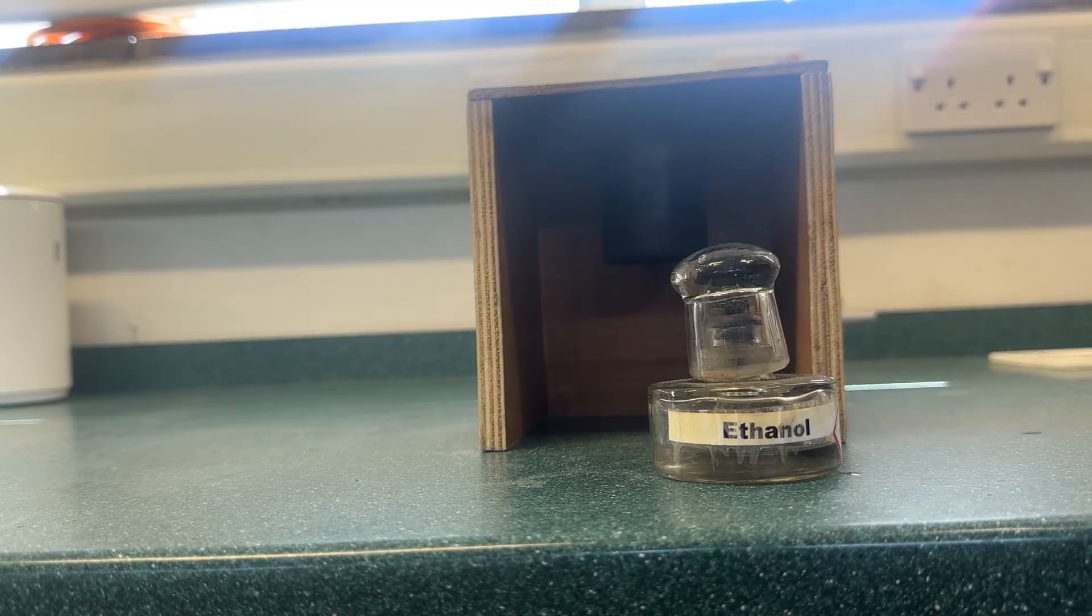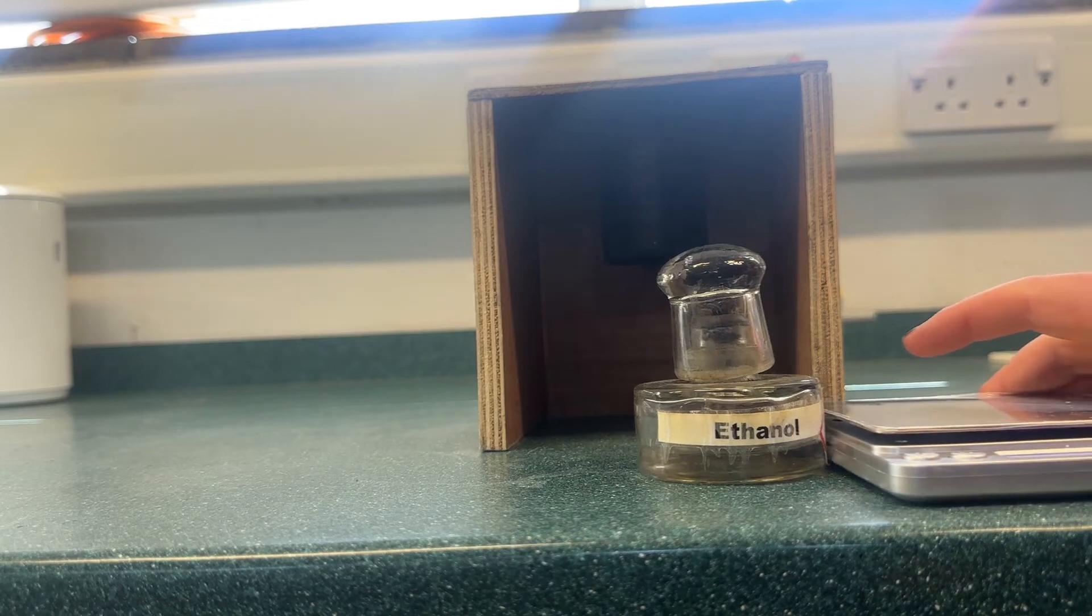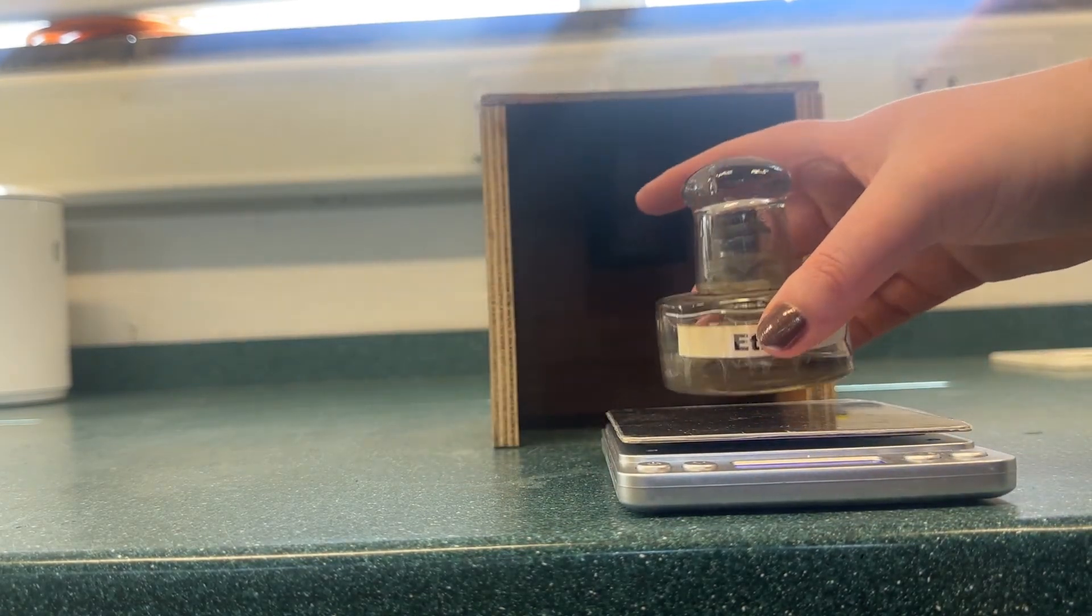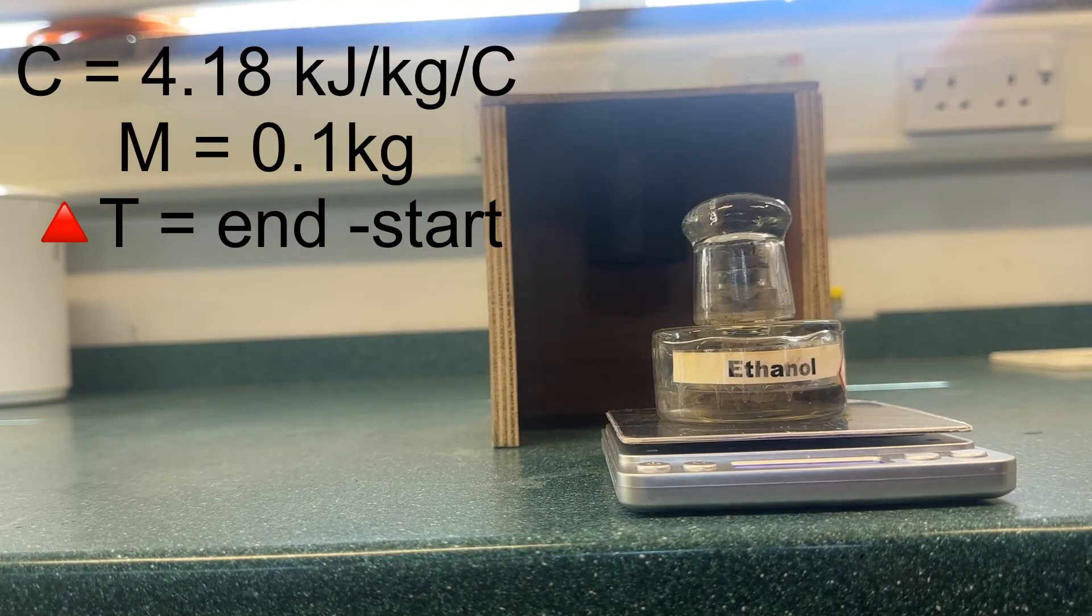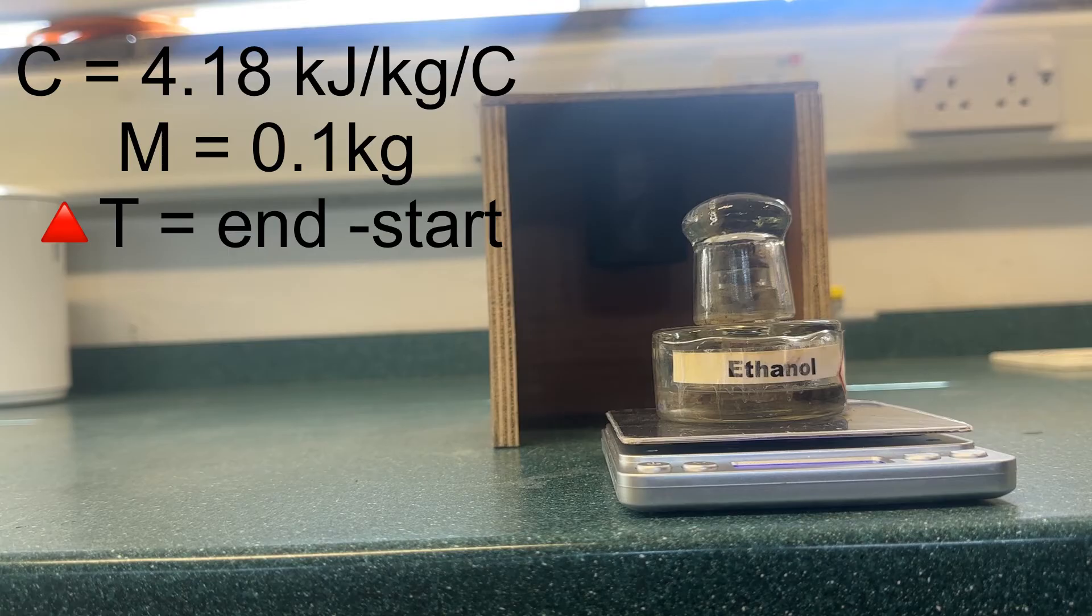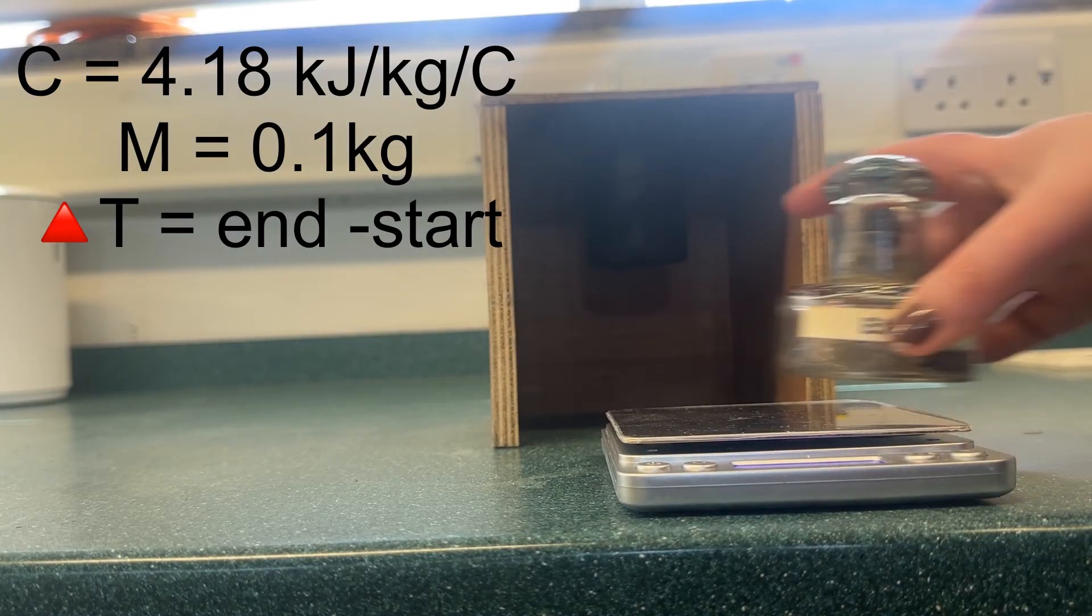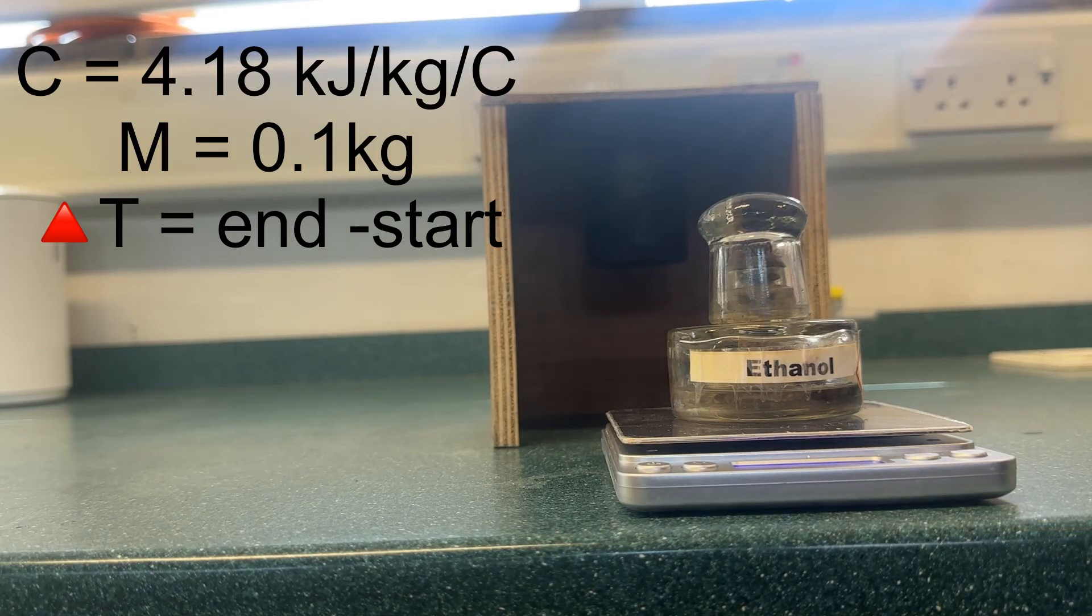At this point you will now have all the information required to calculate the energy released when burning the alcohol. C is 4.18 as we are heating water. M will be the mass of the water in kilograms, in this case 0.1, and delta T will be the difference in temperature: the end temperature minus the start temperature of the water.